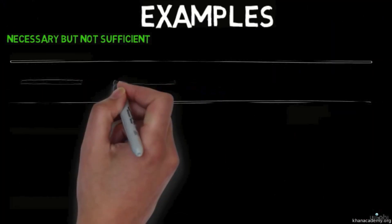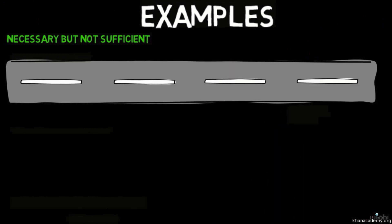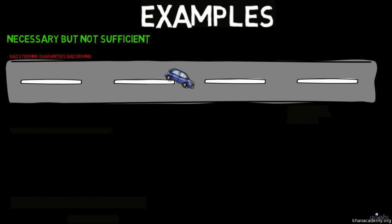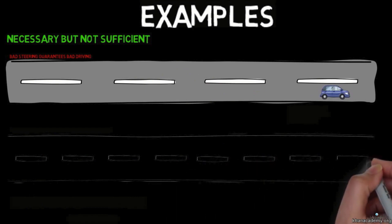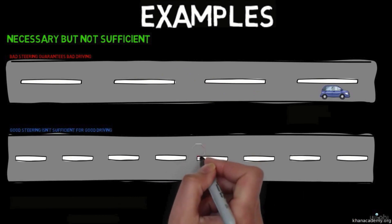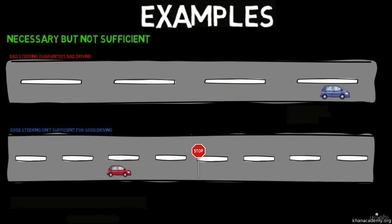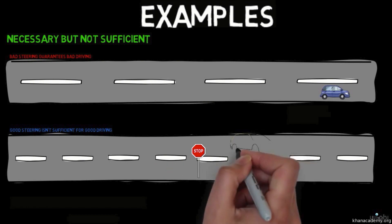Necessary and sufficient conditions come in all combinations. Here's an example of a necessary but not sufficient condition: steering well is a necessary condition for driving well — you can't drive well unless you steer your car well. However, steering well is not sufficient for driving well, since you can steer well but still drive badly for other reasons.